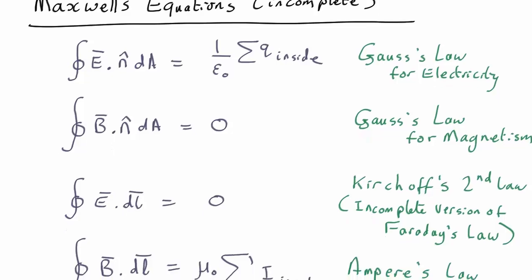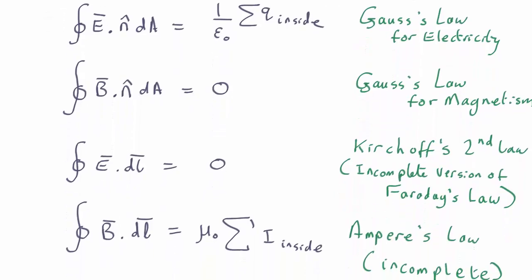Before we start using these line integrals, let's just take stock of which equations we've come together with here for electricity and magnetism. We've now got four equations, and these are known very famously as Maxwell's equations. Though at the moment we don't know all the details, there's still some more to add.